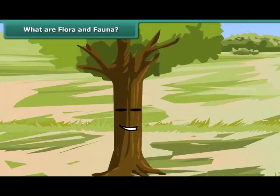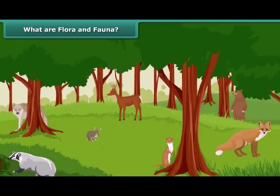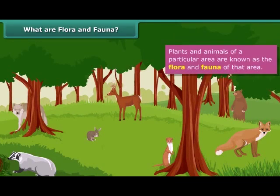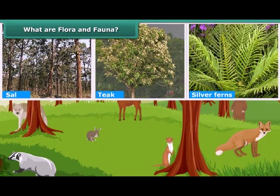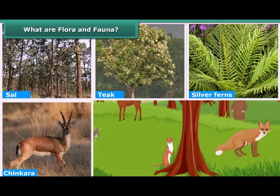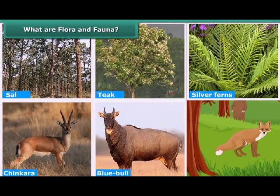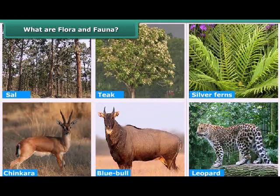Students, you must have observed that some animals and plants typically belong to a particular area. Plants and animals of a particular area are known as the flora and fauna of that area. For example, sal, tea, and silver ferns are the flora, and chicanara and blue bull, leopard, etc. are the fauna of the Pachmarhi Biosphere Reserve.